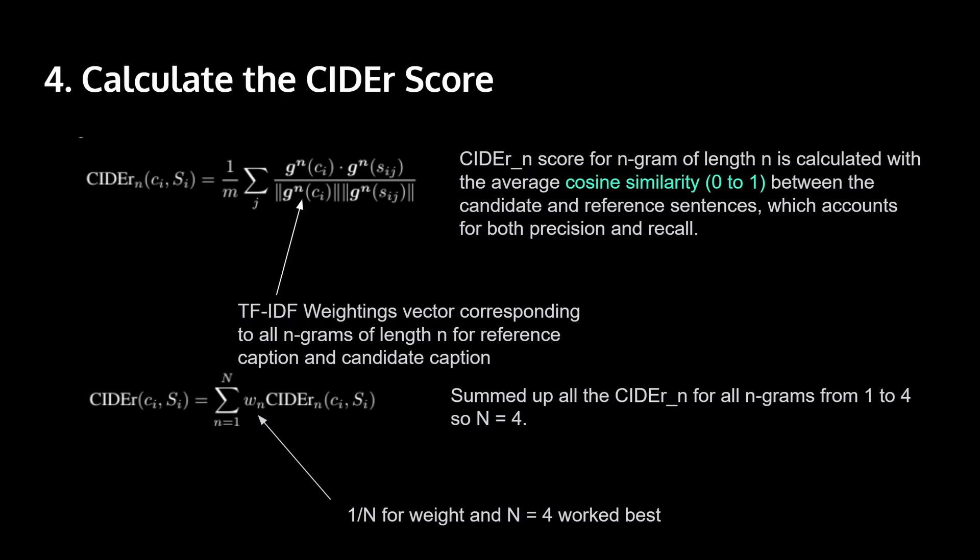And cosine similarity between the candidate and reference sentences accounts for both precision and recall. Which is very good because most other metrics only account for one of them rather than all of them. For example, BLEU only accounts for precision and it lacks recall. Although they try to make up for the recall, it's still lacking in recall. And cosine similarity basically accounts for both, which is very good.